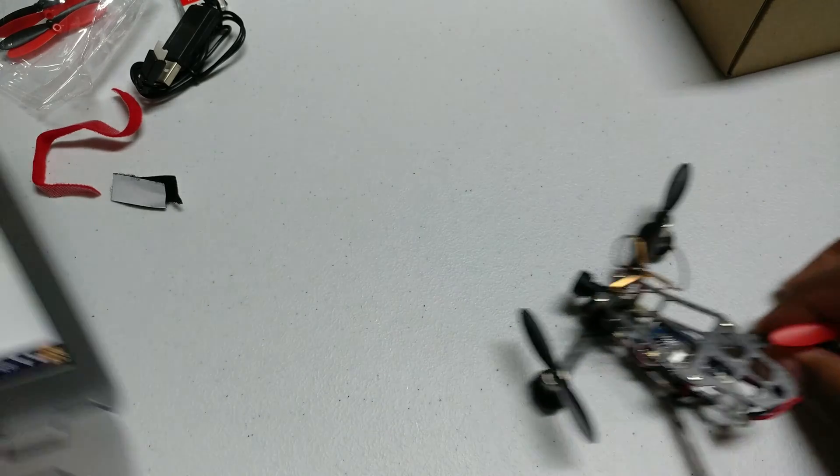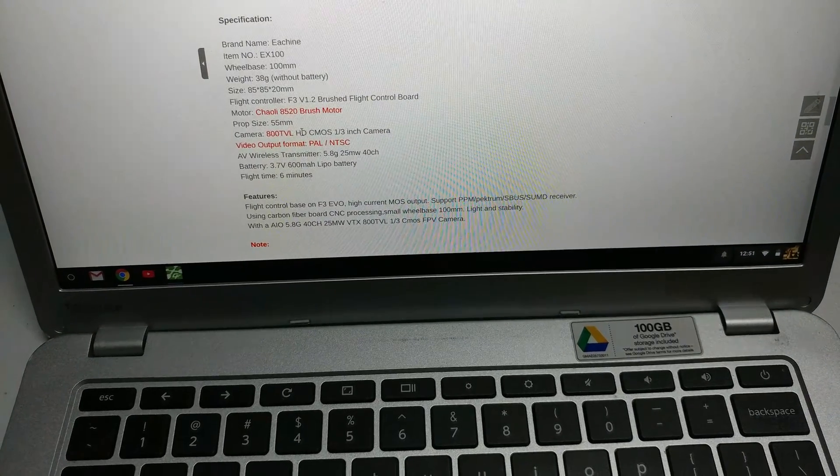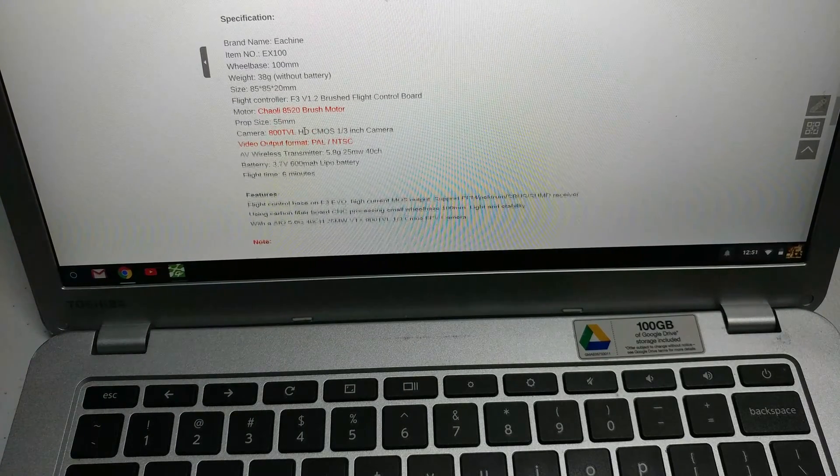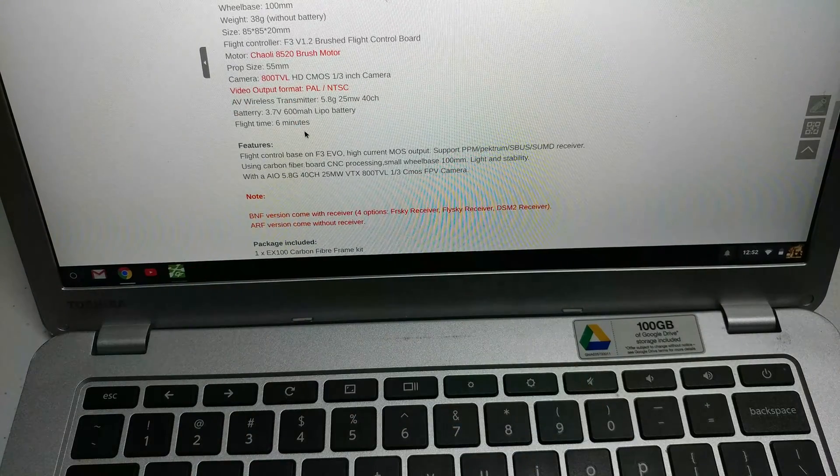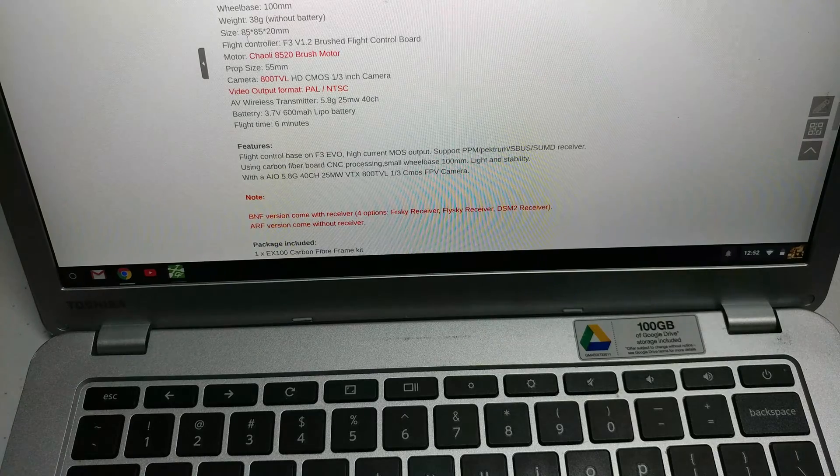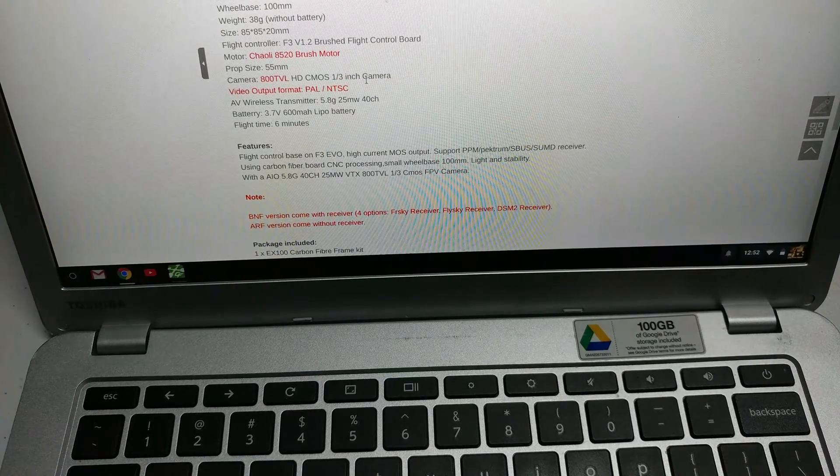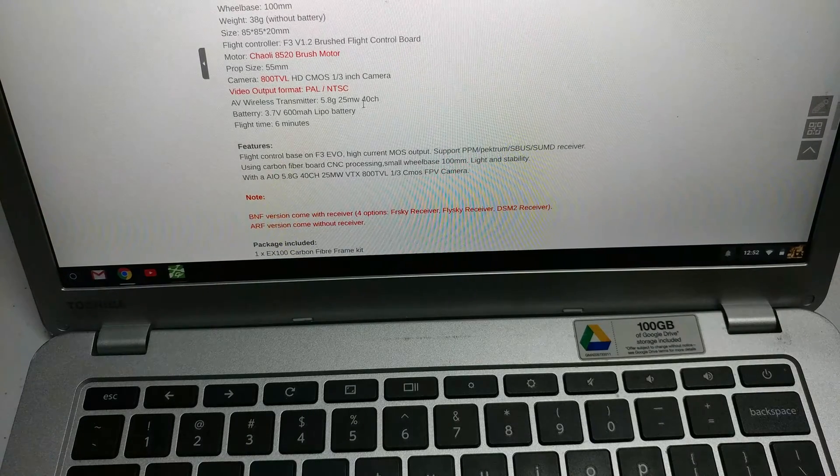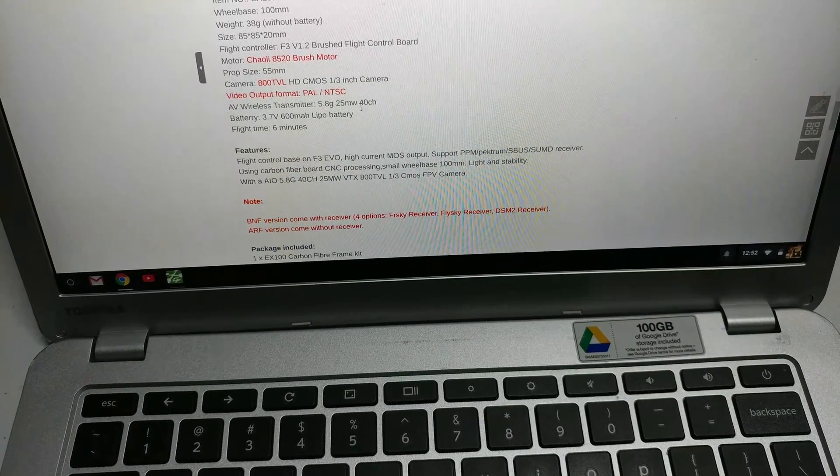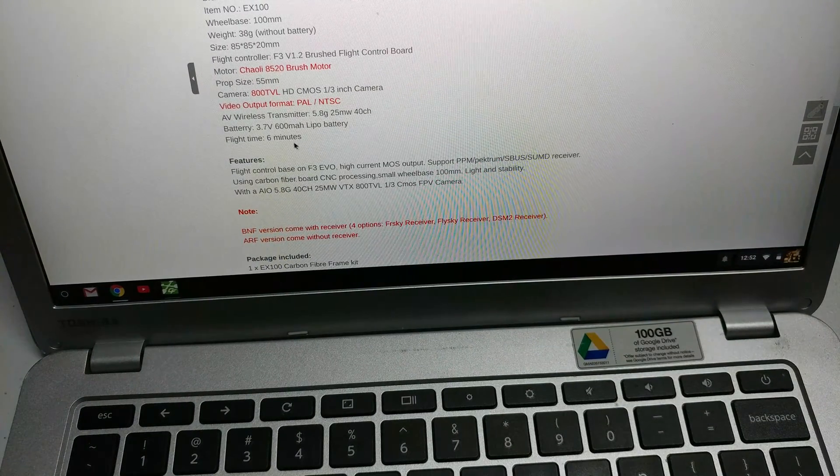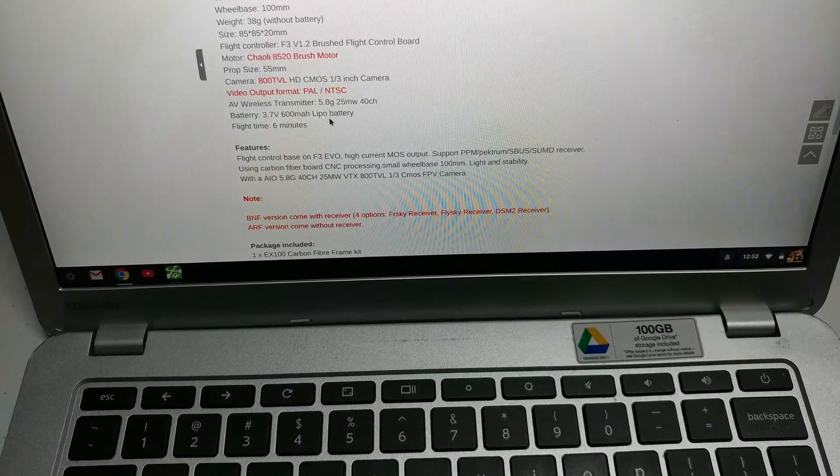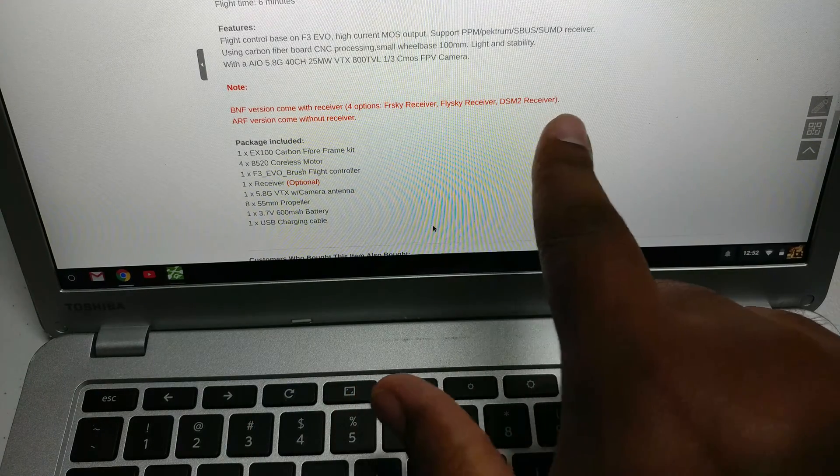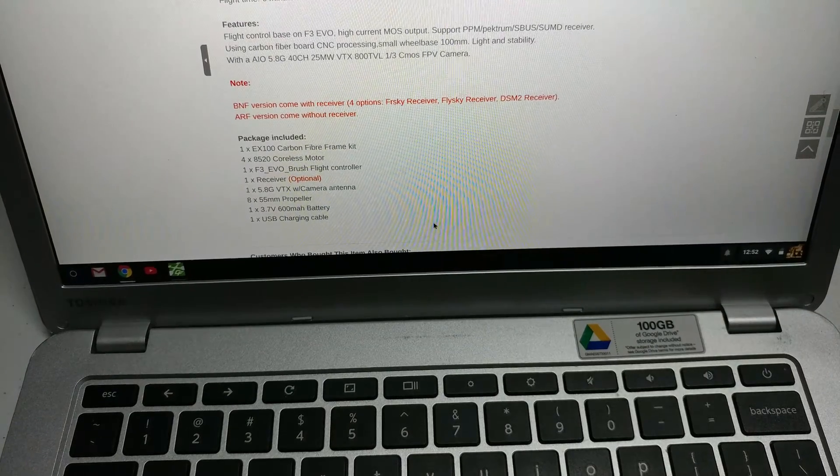Go ahead and read you guys the little specs straight out the website. So it's going to be 100mm micro quad. Weight is supposed to be 38 grams. We'll check that. It's supposed to come with these 8520 brushed motors, 55mm props, 800 TV line CMOS camera, output PAL or NTSC, 25mW 40 channel video transmitter, and should get flight times around six minutes. Now, you do have options. This does come in a FreeSky, FlySky, DSM-2 option, as well as a plug and fly if you have your own receiver.